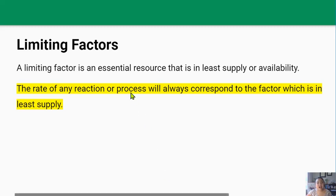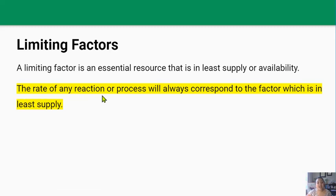Limiting factors are an essential resource that is in least supply or availability, and the rate of any reaction or process will always correspond to the factor which is in least supply — the limiting factor. In the 2.4 achievement standard you must be aware of the limiting factors that can affect the rate of photosynthesis, cellular respiration, DNA replication, and mitosis. This video will cover photosynthesis and respiration, and there will be a future video on DNA replication and mitosis.